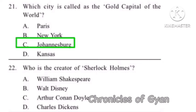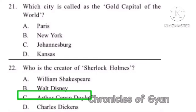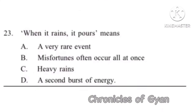At one point, 40% of the world's annual gold production was provided by this city. Question 22: Who is the creator of Sherlock Holmes? Sherlock Holmes is a fictional character created by Scottish writer Arthur Conan Doyle. Option C.